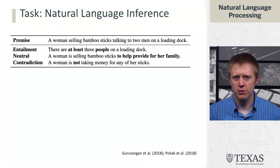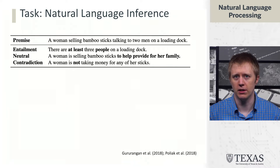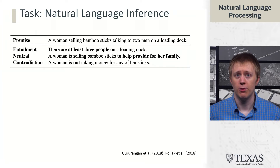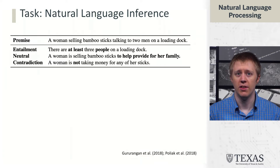One of the tasks we're going to look at here is natural language inference. Recall that this task says we have a premise — 'a woman selling bamboo sticks is talking to two men on a loading dock' — and then we have a sentence we want to classify into one of three classes. For example, 'there are at least three people on a loading dock' would be entailed by the premise, because there's the woman and the two men, so this sentence is implied to be true based on the premise.